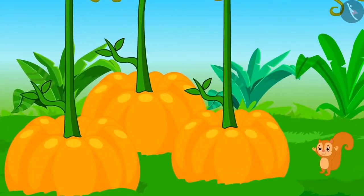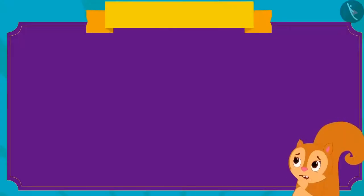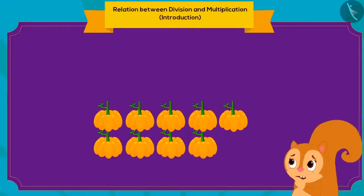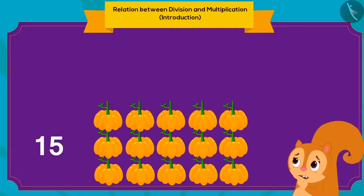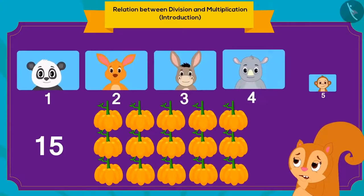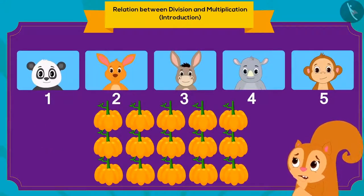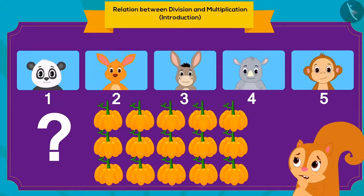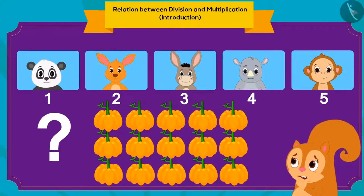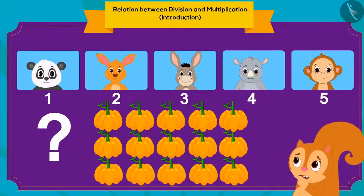She had never seen a pumpkin of this size in her entire life. Chanda decided to divide the 15 large pumpkins among her five friends equally. Children, can you tell how Chanda will do this?